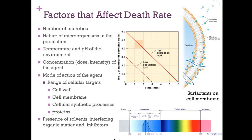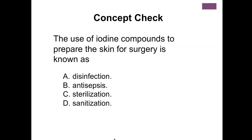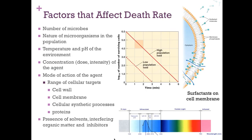The presence of organic matter such as saliva, blood, and feces can inhibit the action of the disinfectant and even heat. Also important are surfactants on the cell membrane — chemical agents go into the cell membrane, creating holes or pores that allow the chemical agent or water to enter the cell and ions to exit, disrupting the whole process.